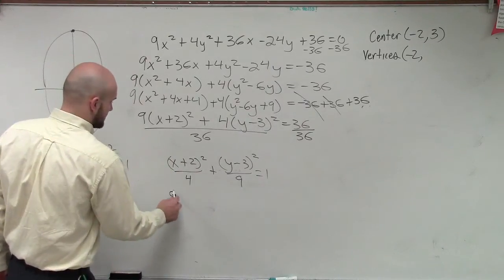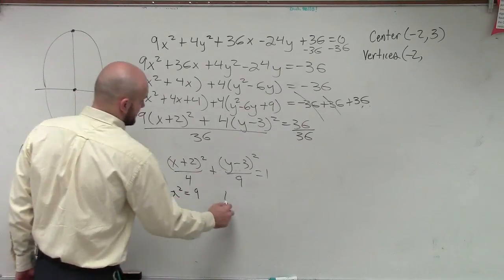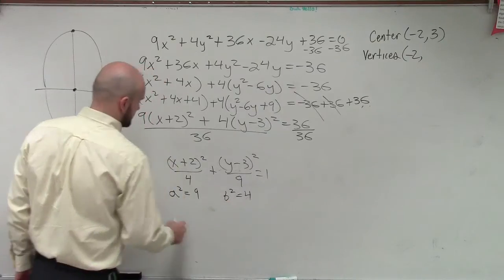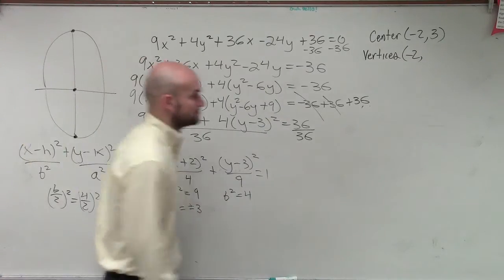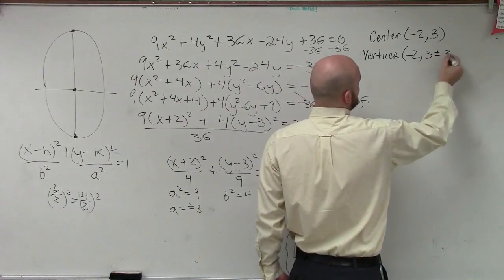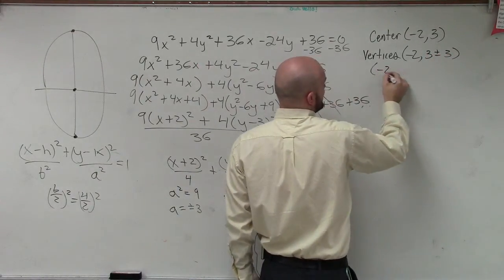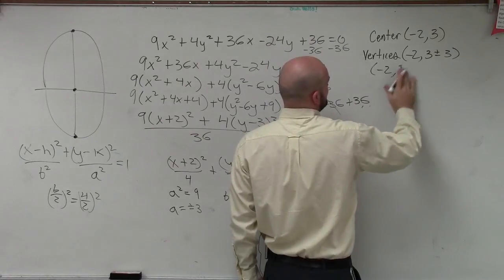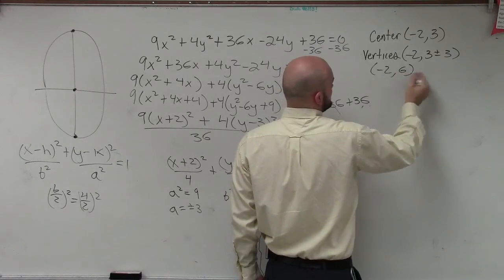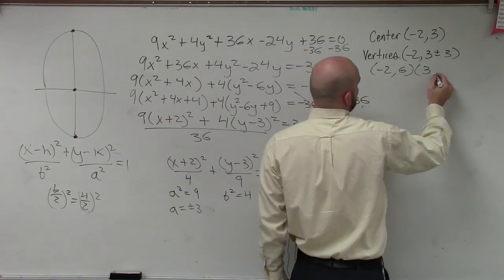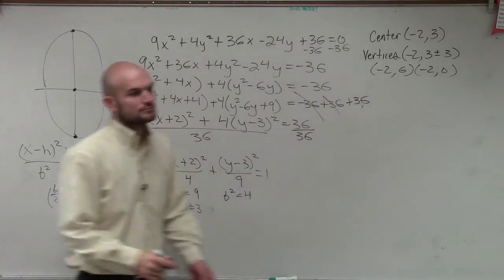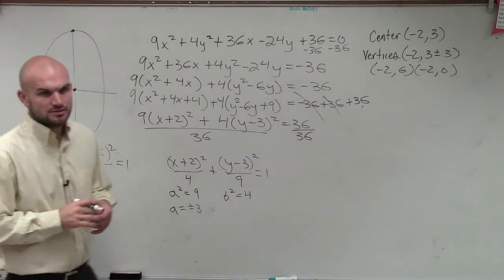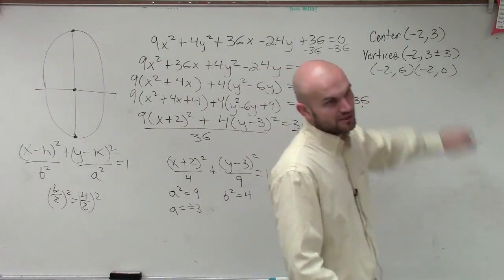We just need to figure out what a is. We know that a² = 9 and b² = 4. So a = ±3. So it's going to be 3 ± 3. So my vertices are (-2, 6) and (-2, 0). Notice how the h is going to remain the same.